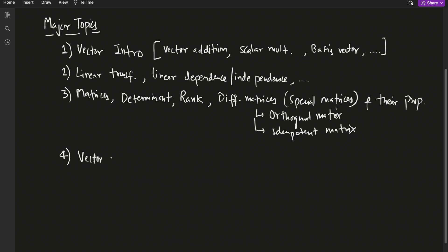The fourth topic is again very important, I think this is one of the most important and sometimes students make a lot of mistakes and confusion in this: vector spaces and subspaces, like we have column space, what is column space, what is null space.